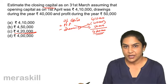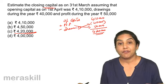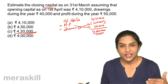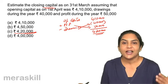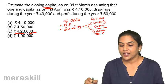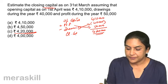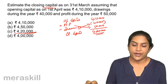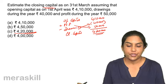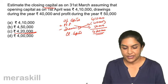Closing capital equals opening capital plus profit for the year — or minus loss — less drawings for the year. That gives us the closing capital. The correct answer is option C: 4,20,000.